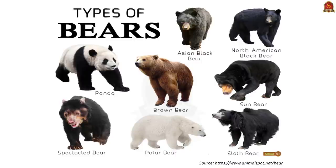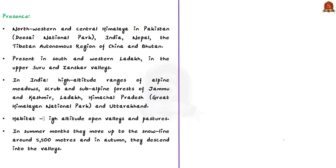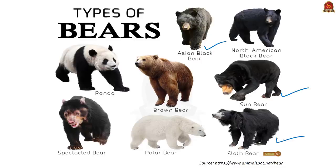The Asiatic black bear, also known as the moon bear or white-chested bear, is a medium-sized species occurring through much of southern Asia, Korea, northeastern China, the Russian Far East, and in limited parts of Japan. It is classified as Vulnerable by the IUCN. The sloth bear is endemic to the Indian subcontinent and is found in India, Nepal, Bhutan, and Sri Lanka.